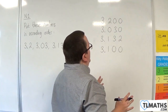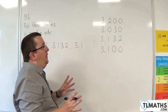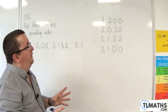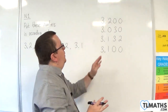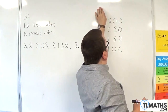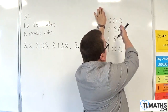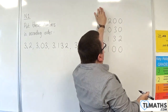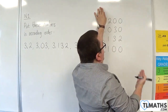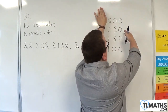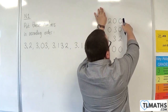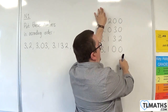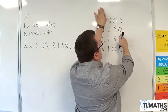Because now it is easy to put these into order. When you ignore the threes and just put those numbers in order — from the smallest to the largest — the smallest of 200, 30, 132, and 100 is clearly the 30.